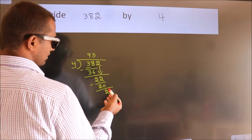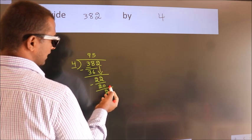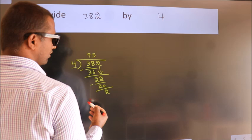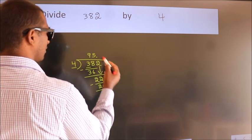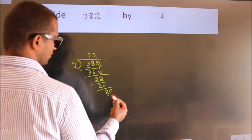After this, no more numbers to bring it down. So what we do is, we put a dot and take 0. So 20.